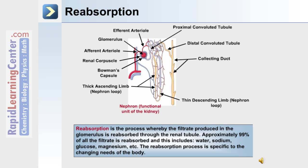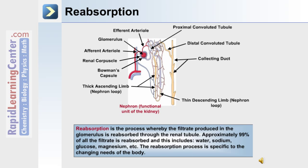Reabsorption is the process whereby the filtrate produced in the glomerulus is reabsorbed through the renal tubule. Approximately 99% of all the filtrate is reabsorbed, including water, sodium, glucose, and magnesium, for example. The reabsorption process is specific to the changing needs of the body.